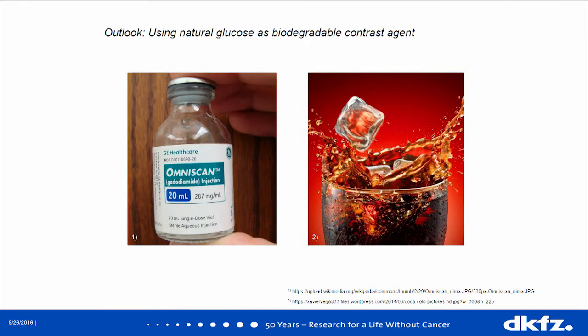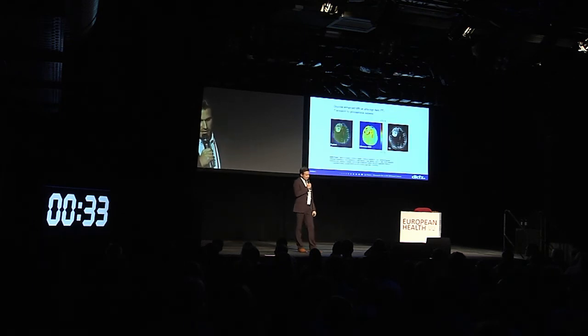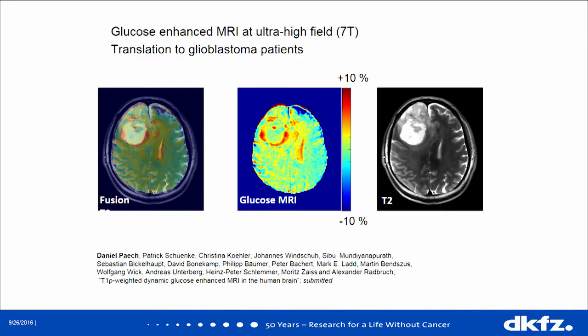We all know breast cancer cells — or cancer cells in general — have high energy consumption, meaning high glucose consumption. So why not try to use glucose as a biodegradable contrast agent for MR diagnostics? This is one of the first realizations of a simple glucose experiment in a glioblastoma patient. In the middle you see the glucose MRI contrast, which clearly outlines the glioblastoma tumor. Like FDG PET imaging, the current field of glucose diagnostics — we think the main application might also be outside the brain, for example in breast cancer. I am looking forward to talking to you after this session.